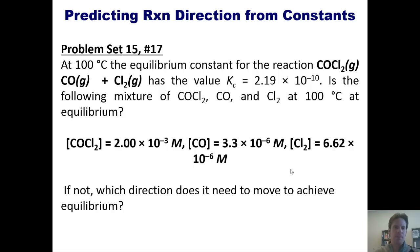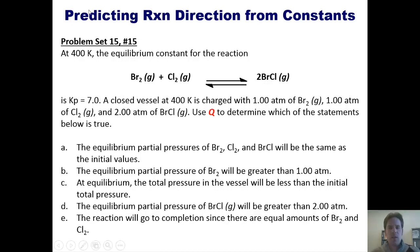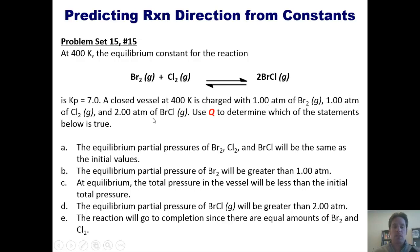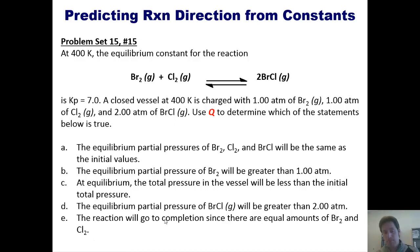Let's take a look at another problem. At 400 Kelvins, the equilibrium constant for this reaction is KP equals 7 — that's an equilibrium constant with respect to pressure. A closed vessel at 400 K is charged with one atmosphere of bromine, one atmosphere of chlorine, and two atmospheres of bromine chloride. Use Q to determine which of the following statements is true. I'm not going to give you the answer right away, but we'll invite you to attempt it on your own. If you wish, you can click this link to a separate video in which I do it for you on the board.